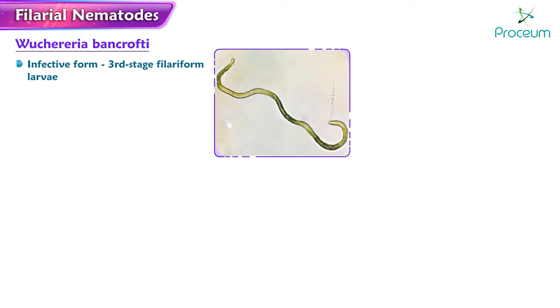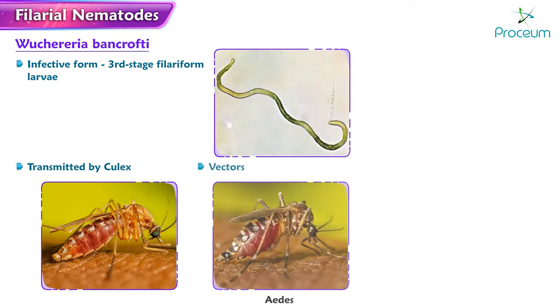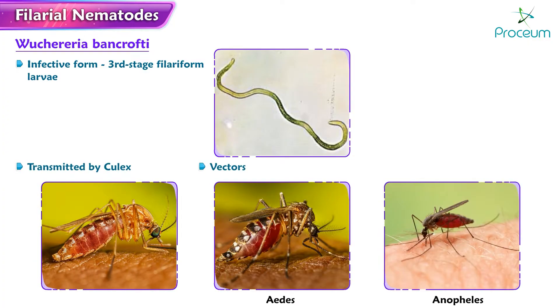Wuchereria bancrofti: Its infective form is the third-stage filariform larvae. It is transmitted by Culex mainly, but Aedes and Anopheles are also known to be its vectors.